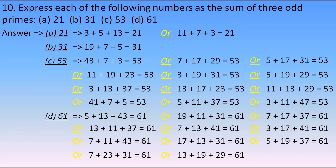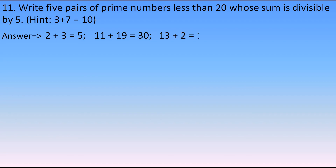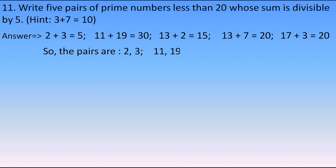The eleventh question: write five pairs of prime numbers less than 20 whose sum is divisible by 5. The pairs are: 2 and 3 (sum 5), 11 and 19 (sum 30), 13 and 2 (sum 15), 13 and 7 (sum 20), and 17 and 3 (sum 20). All these pairs are less than 20 and are prime numbers.